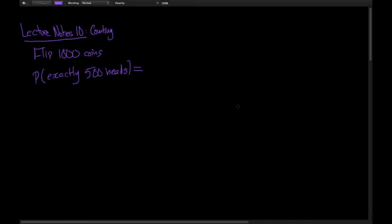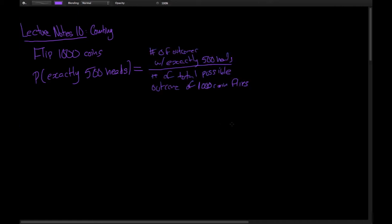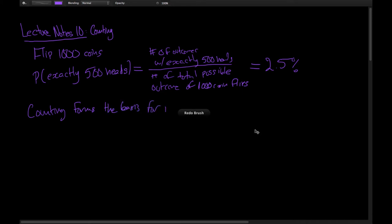This video will be on lecture notes 10, which is counting. We're going to be talking about probability, so let's set the scene with an example. Suppose I flip a thousand coins — what's the probability of getting exactly 500 heads? The likelihood is the number of outcomes with exactly 500 heads divided by the total possible outcomes of flipping a thousand coins, which comes out to be 2.5%. This illustrates that counting forms the basis for probability.